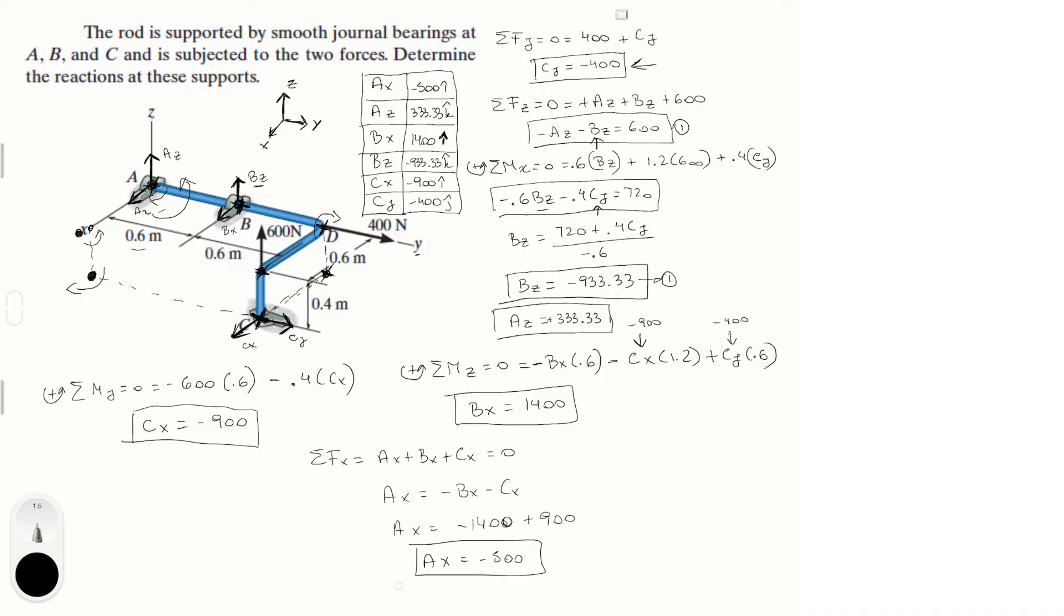That is it. For AX we have minus 500 in the i, for AZ we have 333.33 in the k, for BX we have 1400 in the i, for BZ we have minus 933.33 in the k, for CX we have minus 900 in the i, and for CY we have minus 400 in the j. Final answer for all our reactions at the supports.